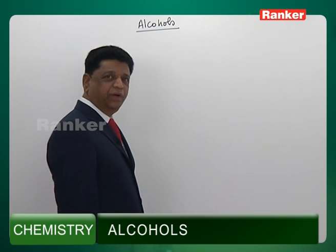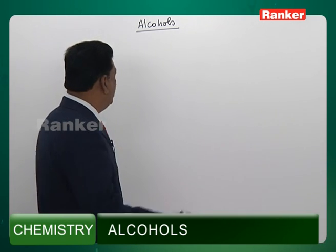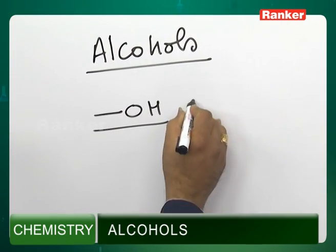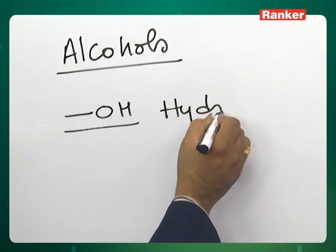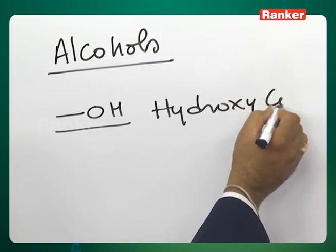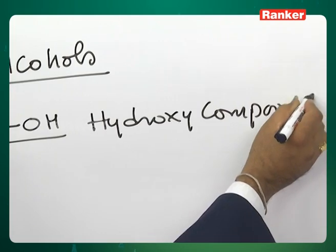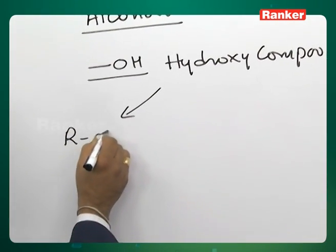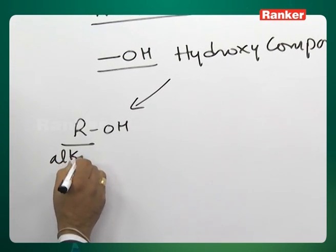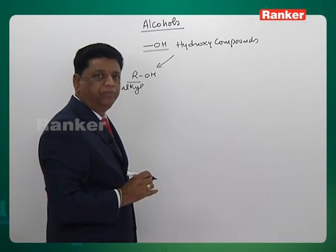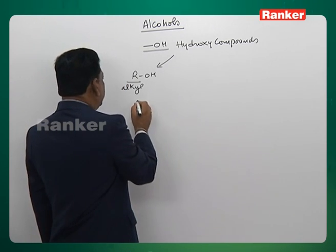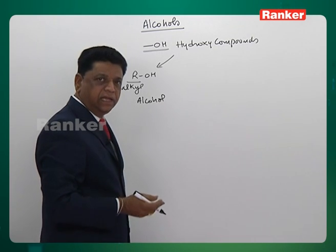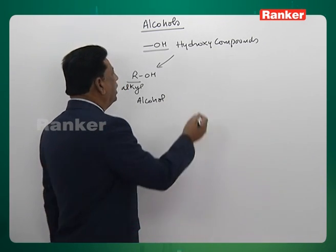Today we will take the topic called alcohols. Alcohols is a part of the topic of compounds containing OH — you can call them hydroxy compounds. In this we have three parts. The alkyl group containing OH group compounds you may call as alcohols, where the alkyl group can be methyl, ethyl, and one degree, two degree, three degree, and so on.